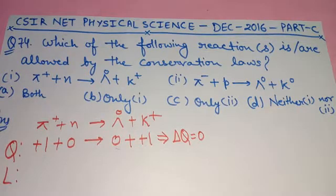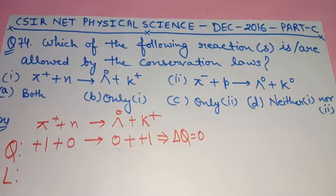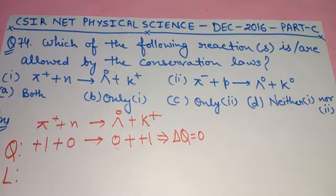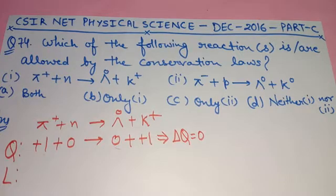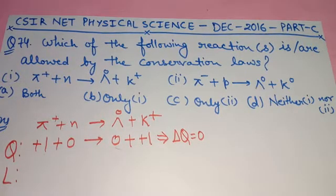In this video, we will discuss a topic of elementary particle physics with the help of a question which was asked in December 2016 CSI internet physical science exam, in part C. All the questions are 5 marks, so this question was also 5 marks. To solve this question, you need to know the classification of elementary particles which was discussed in a previous video — I will give the link in the description.